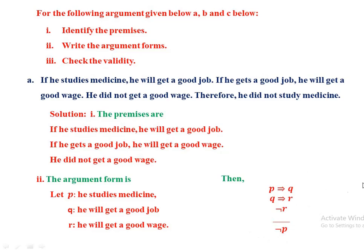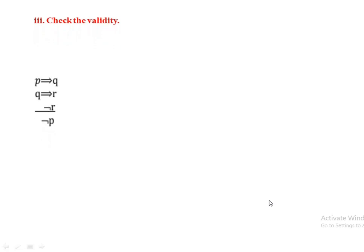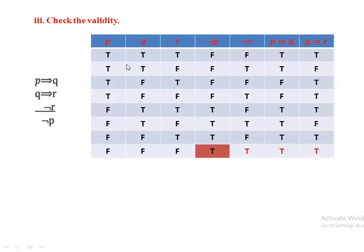We check validity by constructing the truth table. The argument form is P implies Q, Q implies R, negation R with conclusion negation P. Since we have three propositions P, Q, and R, there are eight possible combinations of truth values.